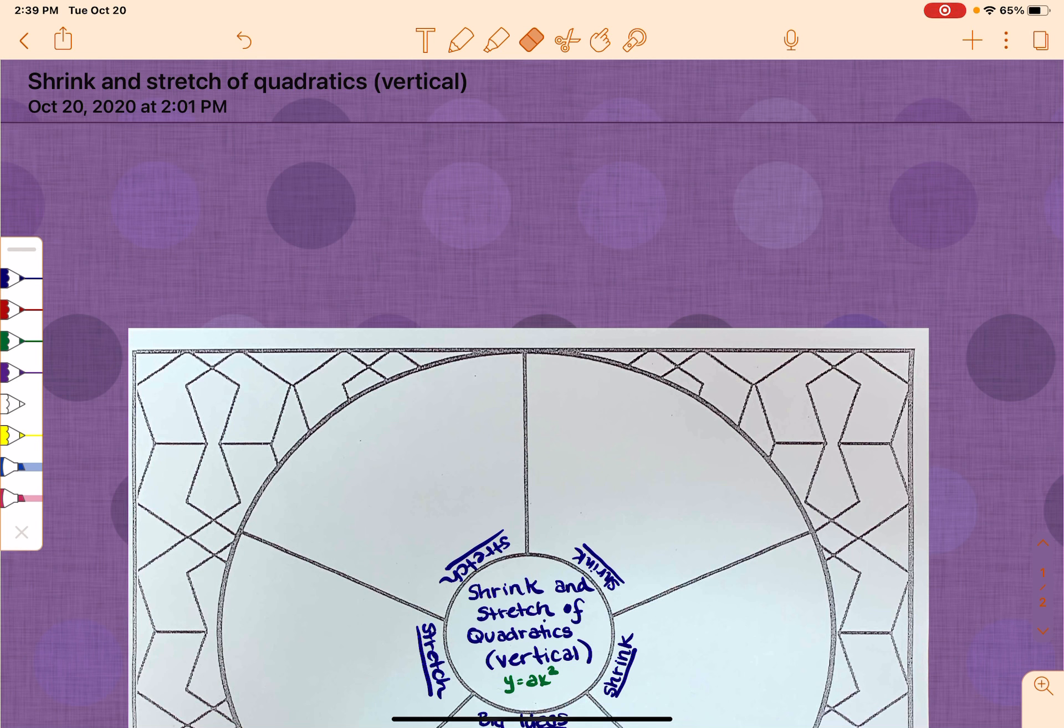Hi guys, today we're going to begin a discussion with quadratics that's a little different than what we've talked about before. We are going to be talking about whether something is a stretch or a shrink of a quadratic vertically. So we're going to look at what it means to be stretch and what it means to be a shrink and how you determine that from looking at an equation.